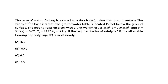The footing rests on a soil with a unit weight of 115 pounds per cubic foot, a C value of 280 pounds per foot squared, and a phi value of 36 degrees. For this phi value, we're given bearing capacity coefficients for use in the ultimate bearing capacity equation. The required factor of safety is 3, and the allowable bearing capacity in kip per foot squared is most nearly what?